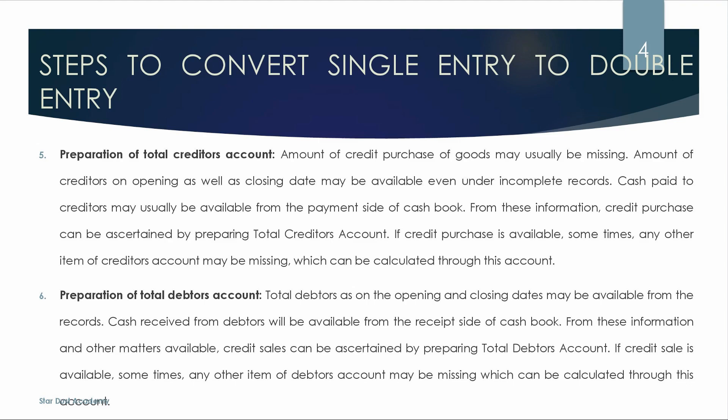Next is preparation of total creditors account. Amount of credit purchase of goods may usually be missing. Amount of creditors on opening and closing date may be available even under incomplete records. Cash paid to creditors may usually be available from the payment side of cash book. From this information, credit purchase can be ascertained by preparing total creditors account. Credit purchase can be calculated from the creditors account.